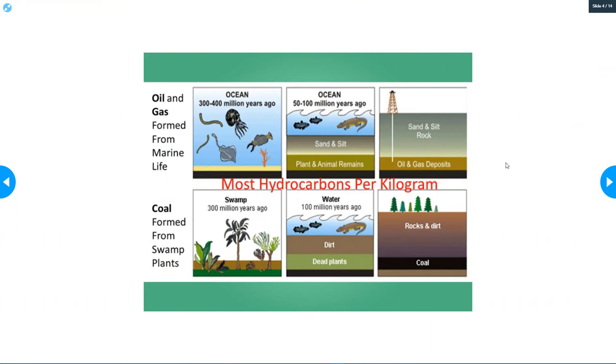It gets deposited on the bottom of ocean floors, and then sand and silts and different things get piled on top. With the pressure and the heat it turns into oil and gas, but it takes millions of years for it to be created. Once we run out, it's going to be millions of more years before there's more.